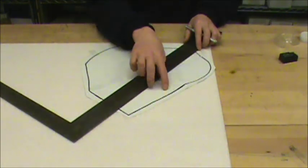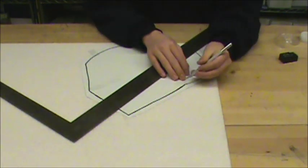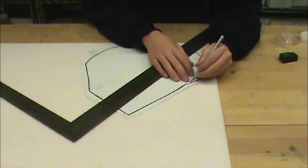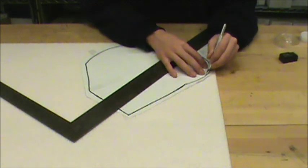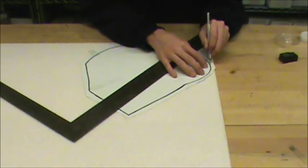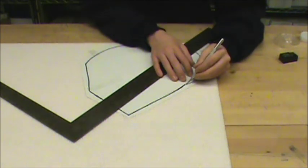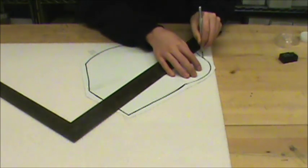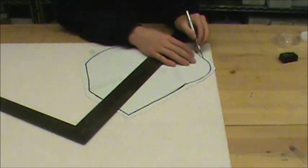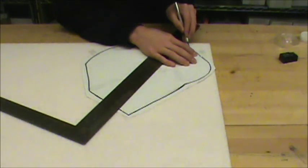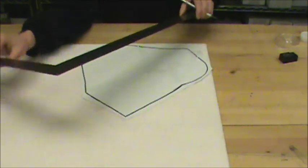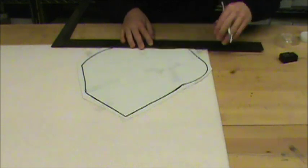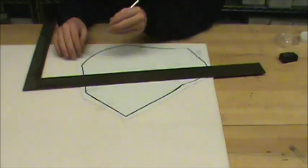For curved edges, what I like to do is just kind of cut through halfway, just score it, just to try and get the curve right. Then once I'm happy with the line, go in and cut all the way around. And then finish your curve like so. And then once you're back to a straight edge, use your straight edge.